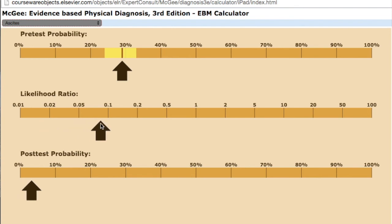So let's say that we do the fluid wave test and we are able to appreciate a positive fluid wave sign on our patient. Remember that had a positive likelihood ratio of 5.3. So now all of a sudden we go from a pre-test probability of 30% that this patient had ascites to over 70% for our post-test probability, which significantly changes our thinking in our diagnosis.